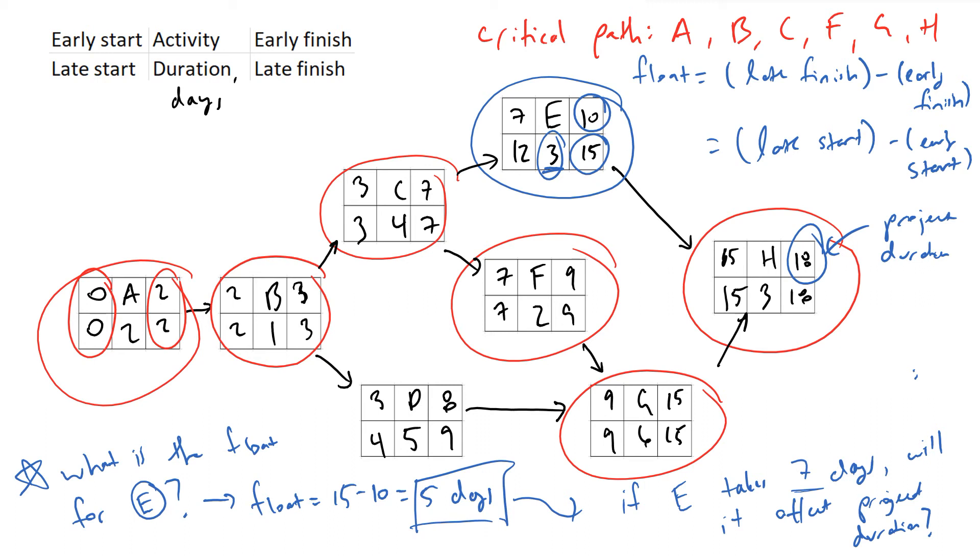And so what we see here is that this float value of five days is telling us that E can take up to eight days, which is three plus five. And as long as we're taking less than eight days on project or task E, it will not affect us. So the answer to this question is no.